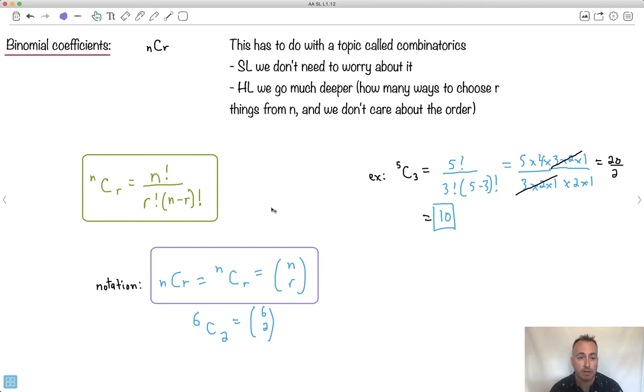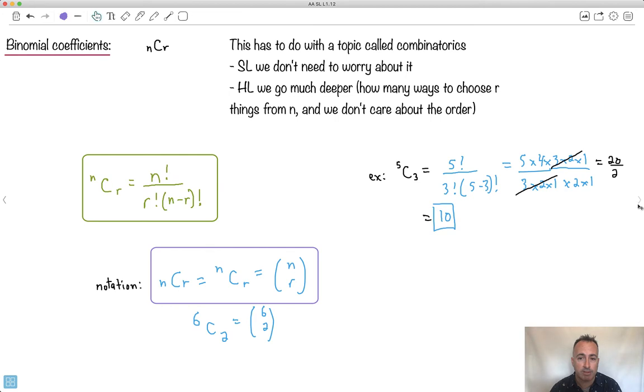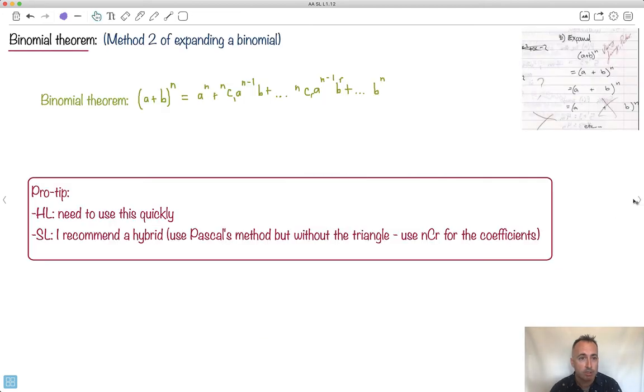So now that we've seen what nCr does, we've seen what factorials are, now we can actually finally do the binomial theorem. So this is going to help us in order to solve more complicated binomials.